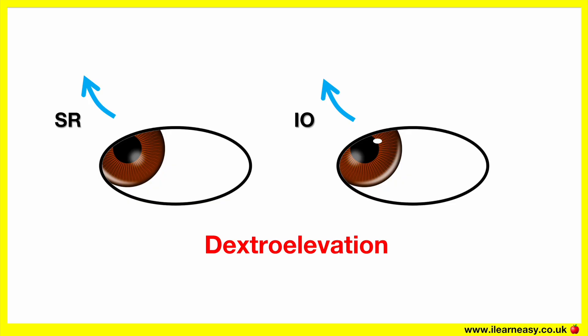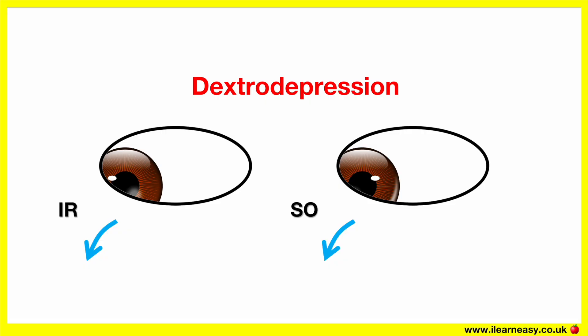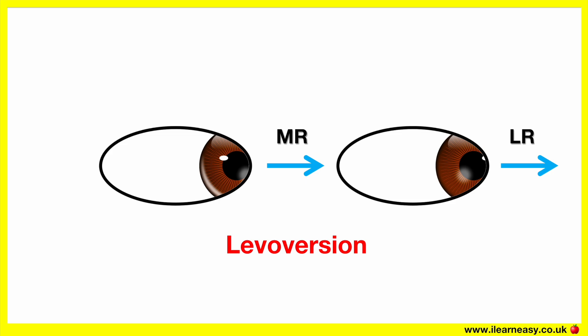Dextroelevation — this is when you ask the patient to look up and to the right. This position assesses the function of the right superior rectus and left inferior oblique. Dextrodepression — this position assesses the function of the right inferior rectus and left superior oblique. Levoversion — this position assesses the function of the left lateral rectus and right medial rectus.